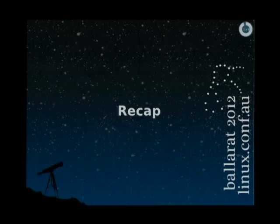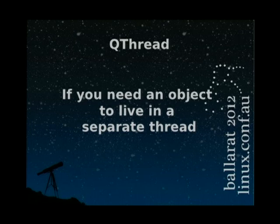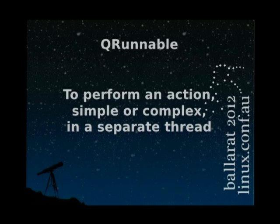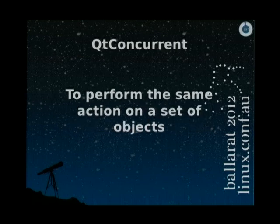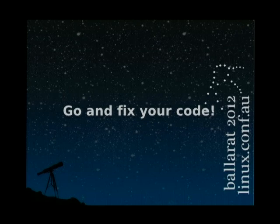Let's do a small recap. Use QThread when you need an object to live in a separate thread — this includes the object and all its children. Once an object lives in a thread, it can create children in that same thread and do anything you want. QRunnable is great to perform an action, whether simple or complex, in a separate thread without hassle. And last but first: QtConcurrent is probably the solution to all your multi-threading problems when you need to perform the same action on a set of objects. Now that you know this, go fix your code.